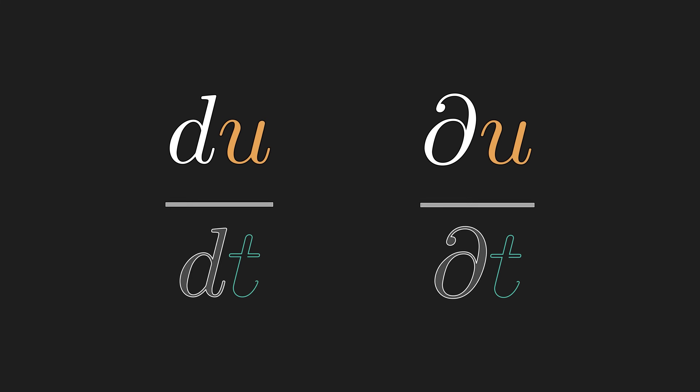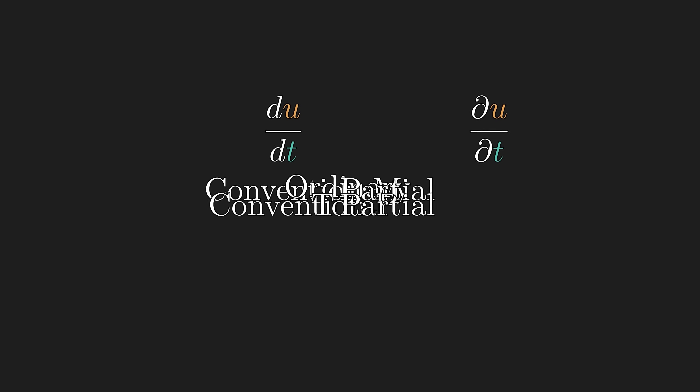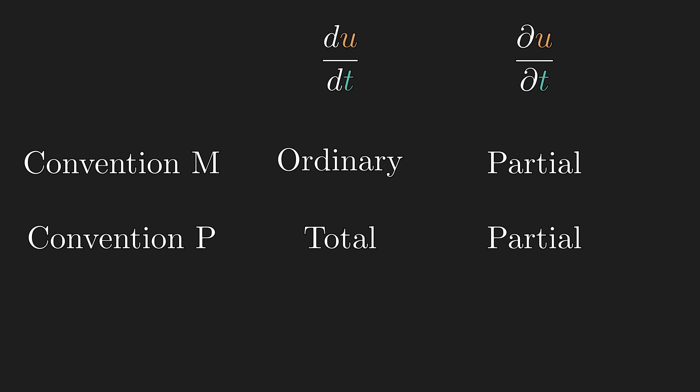The derivative is arguably one of the most significant inventions in human history. But unfortunately, we have not consolidated on a precise meaning of these notations, and even the word 'partial derivative' means different things in different contexts. Currently, there are two most widely used conventions.